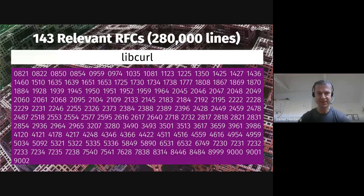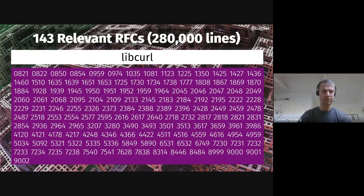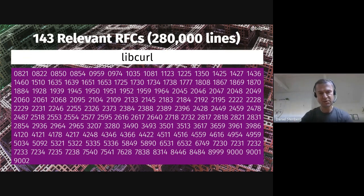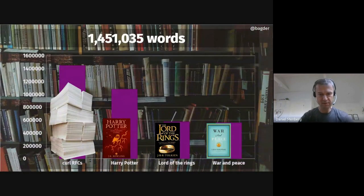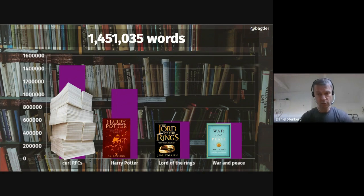The curl project is not that complicated, but what is complicated is understanding what curl does. I did a rough check of what kind of specifications you need to read if you want to read up on the protocol details for the protocols curl supports, and I ended up with 143 different RFCs — give or take, there are a few newer ones not included. Nobody has ever read all of these, but you need to be able to find them and go back and check them. The number of words in all those RFCs is way more than the entire Harry Potter series, or the Lord of the Rings series, or even War and Peace.